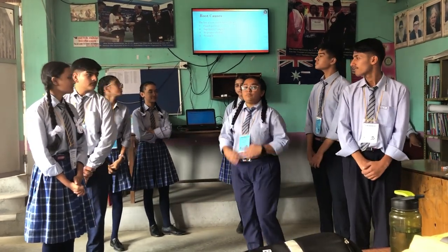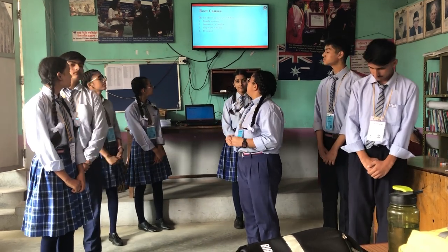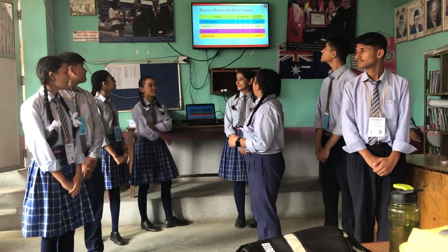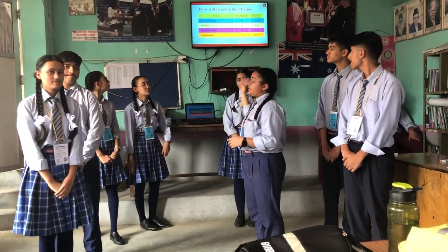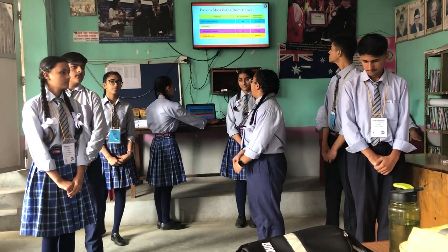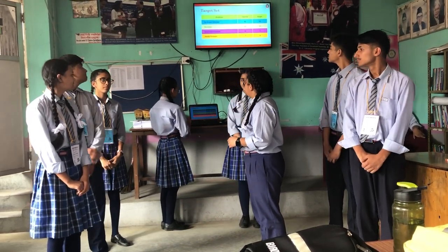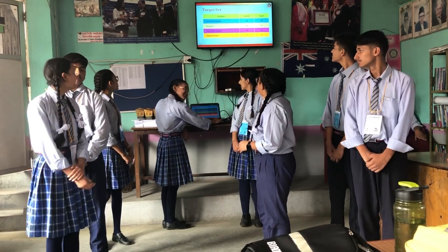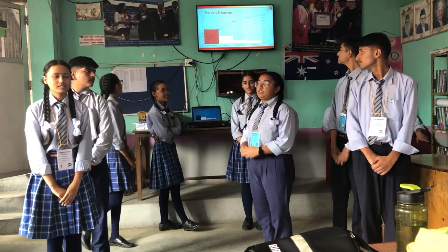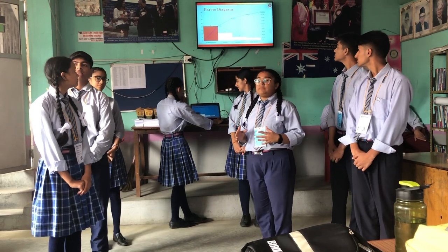So from the Why-Why analysis, we have these particular root causes: family pressure, superiority complex, no proper schedule, and pessimism. In the Pareto matrix, 41 have no proper schedule, 22 are pessimist, 10 have superiority complex, and 7 have family pressure. As shown in the Pareto diagram, no proper schedule and pessimism have gotten nearly 80% of the majority.